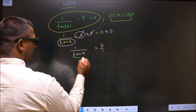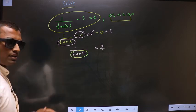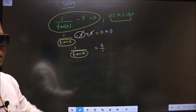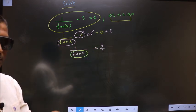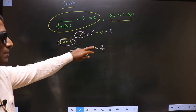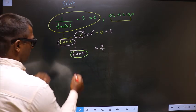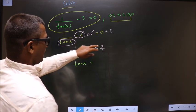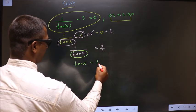Now to get tan x, we should do reciprocal on both sides. So here we get tan x and here I get 1 by 5.